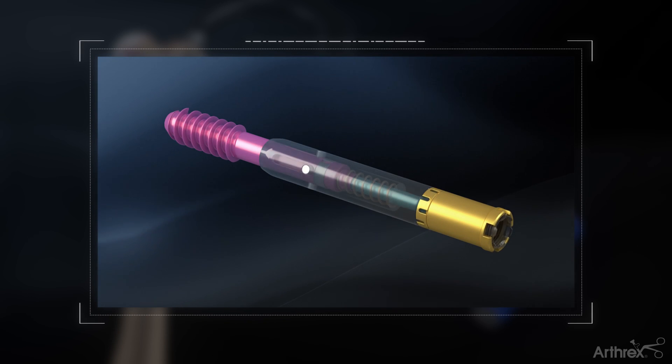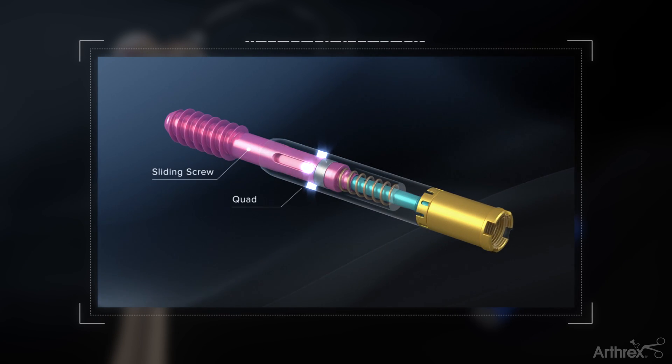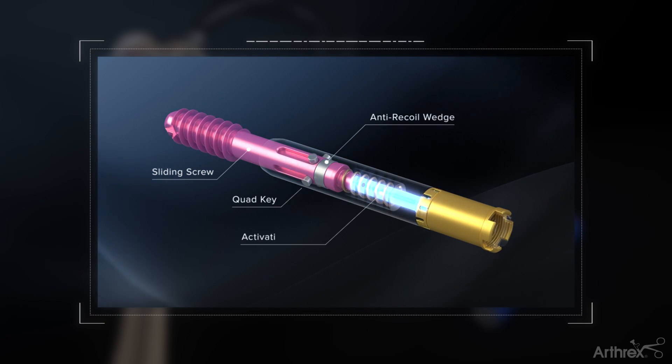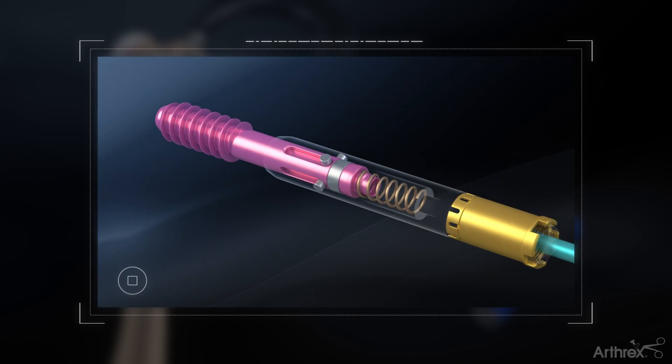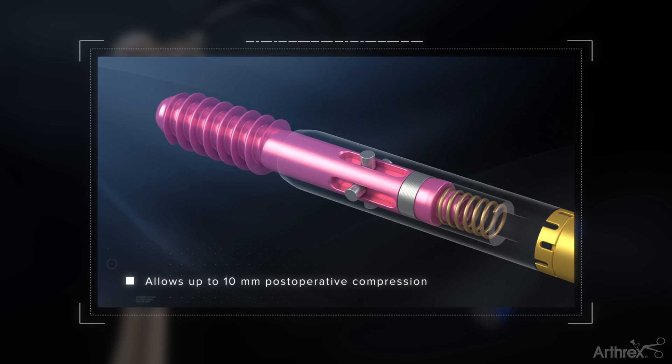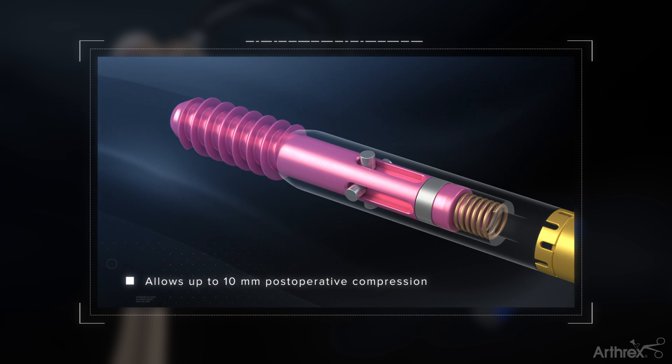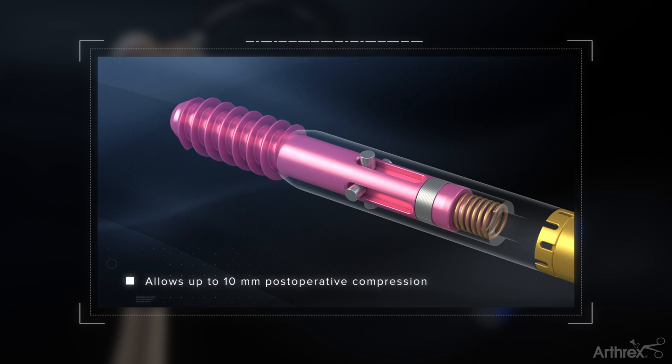The 10.5 mm telescoping lag screw features many innovative internal features and mechanisms and is locked into the nail via expansion of the circumferential locking ring. The design allows up to 10 mm of postoperative compression within the lag screw to prevent lateral thigh pain.